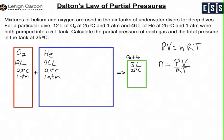In the first tank, you have 12 liters at 25°C and 1 atmosphere. The number of moles of oxygen is 0.49 moles. Similarly, in the helium tank using the same equation, you get 1.9 moles of helium.